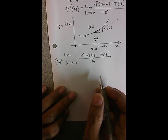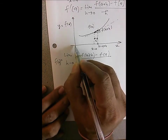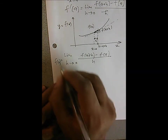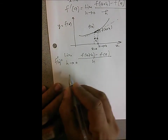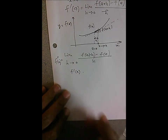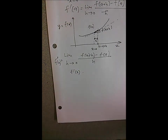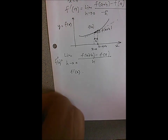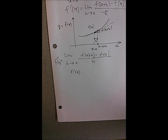By taking this derivative at different points from x equal to minus infinity to plus infinity, we get the derivative function f'(x). So anytime you take the derivative of a function at a particular point, think of it as the slope of the tangent of that function at that particular point.